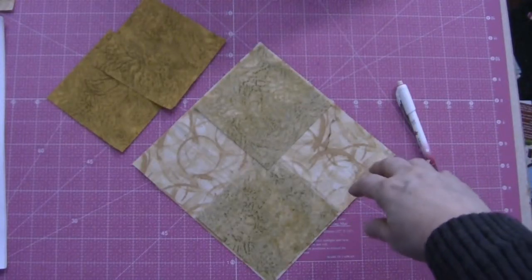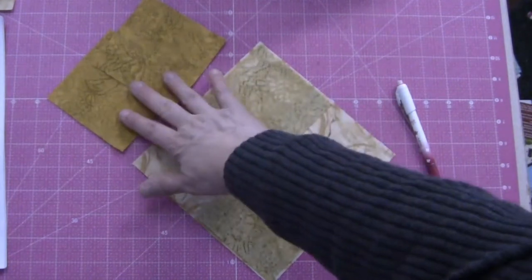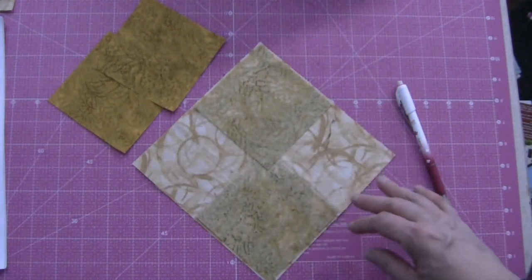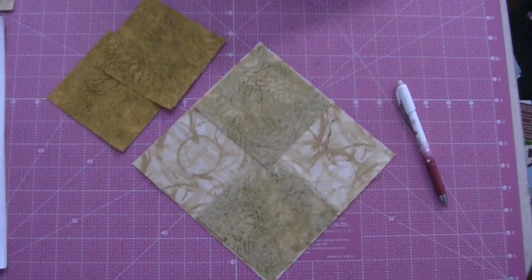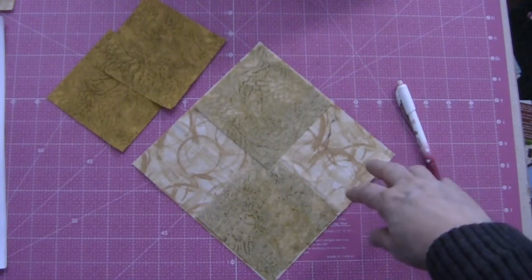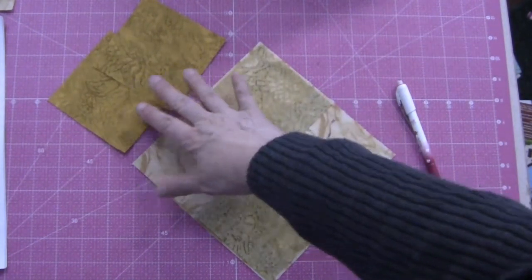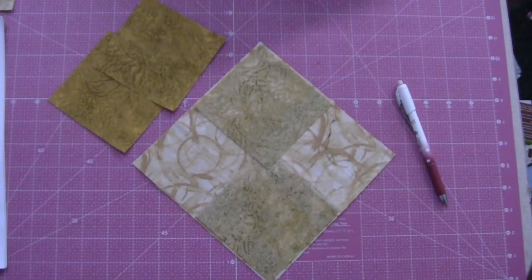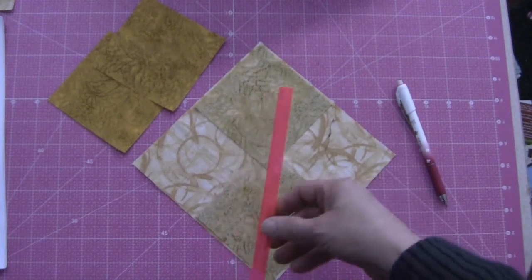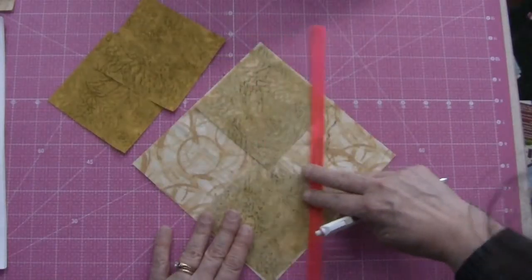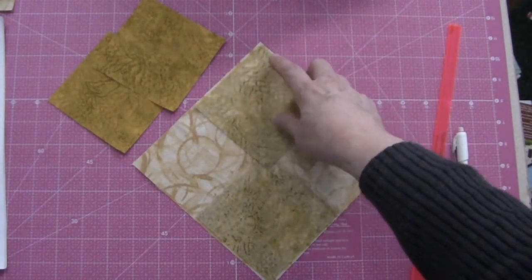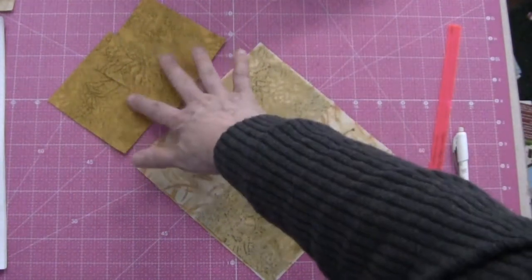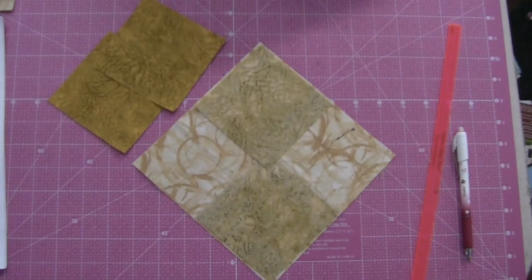Now we're going to take the large square of Fabric A and the four squares of Fabric E and make four flying geese units. The instructions for that are found in Step 1 of Block 5, so they're in the March installment. But remember, we start that by drawing some stitching lines. Notice that the squares are scooched in a little bit from the side. We're going to sew those, cut it apart, press, and then we'll be able to position the next squares on. I'll come back and show you that step.